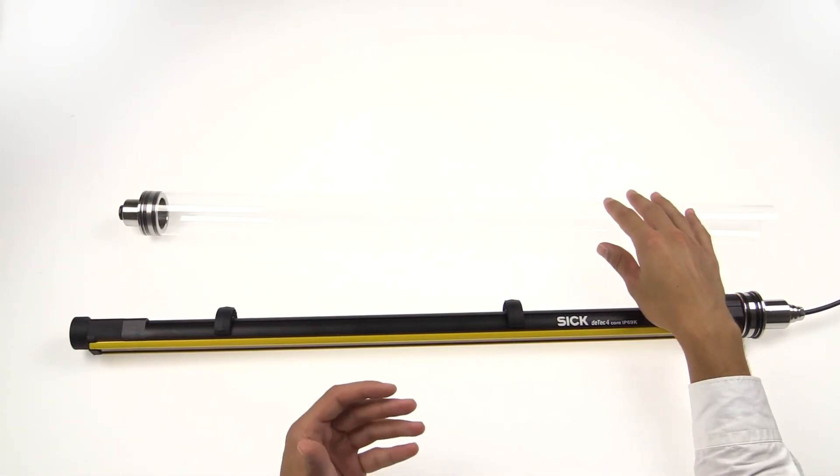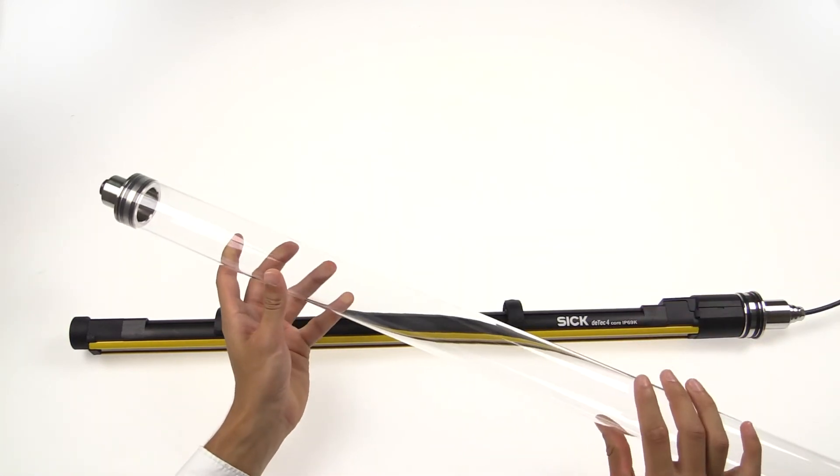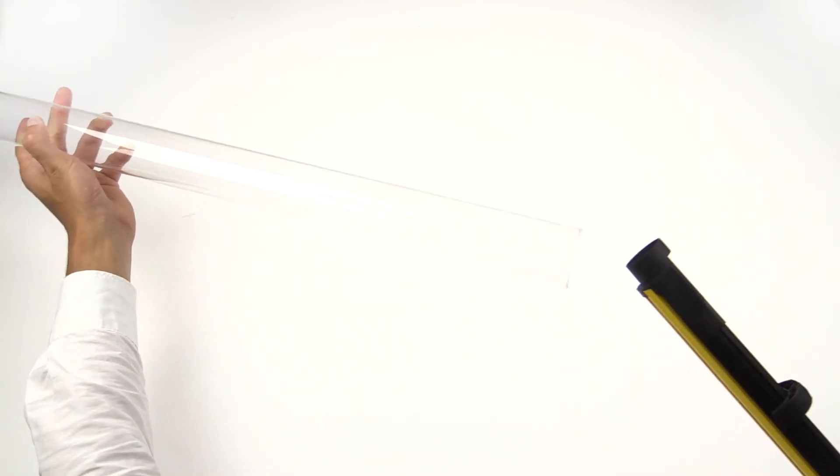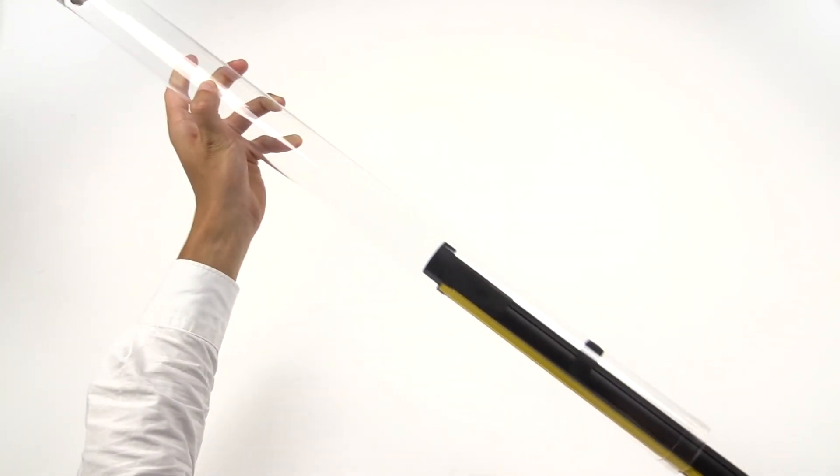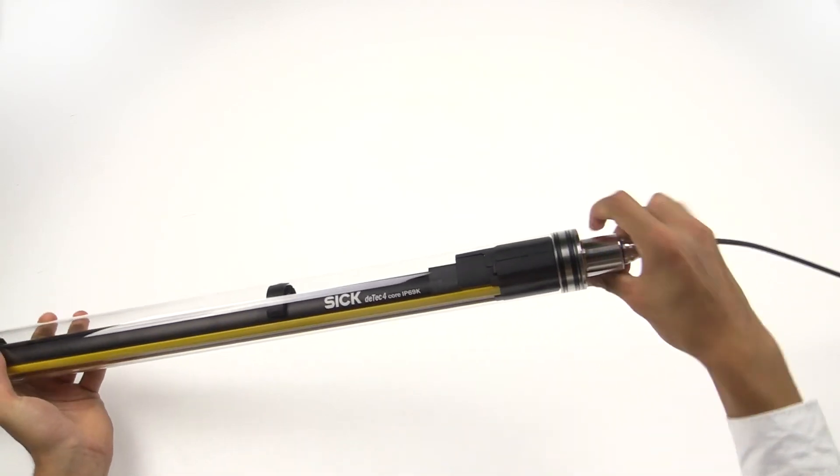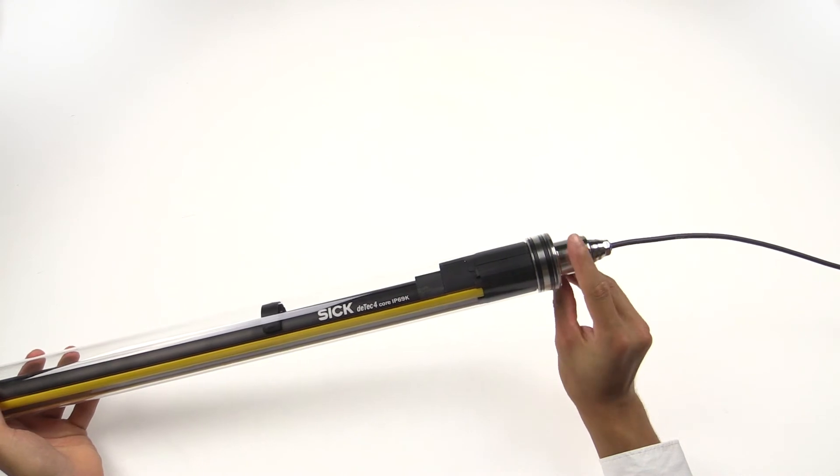After that, we pull carefully the protective housing over the whole sensor, pulling it over until it stops at the end cap where the cable comes out.